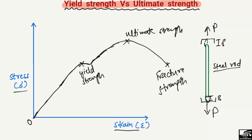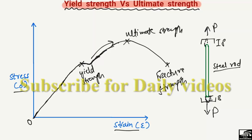Why does the stress increase again after the yield strength? Because the molecules try to rearrange themselves and take a new shape. Due to this new molecular arrangement they achieve higher strength, and that's why the graph increases after the yield point.